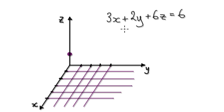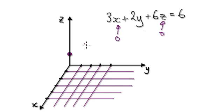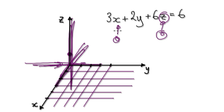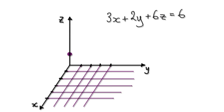Now set this to zero and set this to zero, and work out how much in the y direction it would be. X is moving along here, so when you set it to zero, it must lie somewhere along here. Z is moving in this direction, so when you set it to zero, the height would be zero. So it's just us working out how far across it would be. When you set this to zero, these terms disappear, and y must be three — one, two, three — so it must cross here.